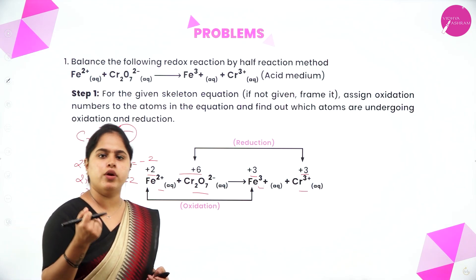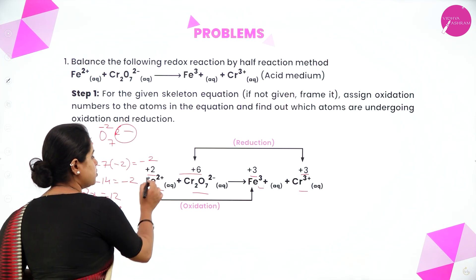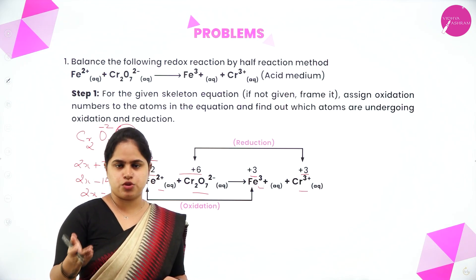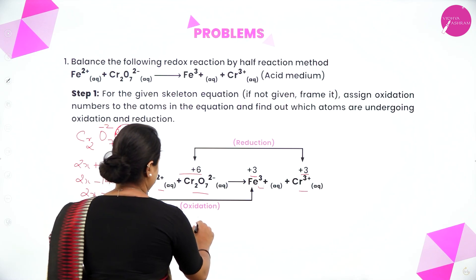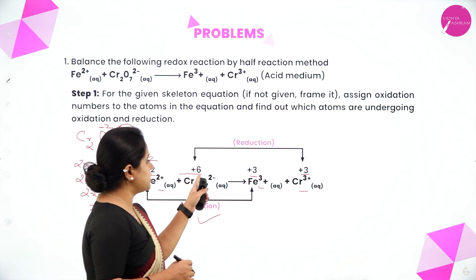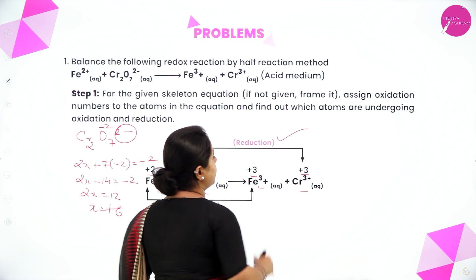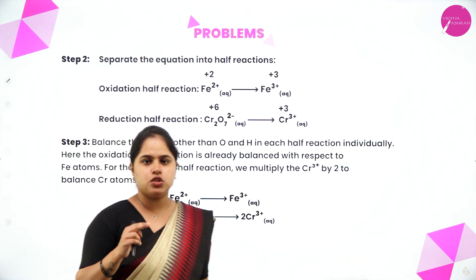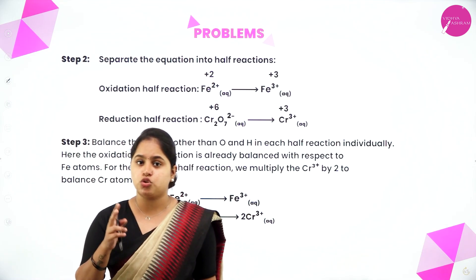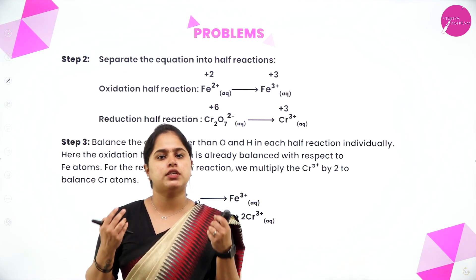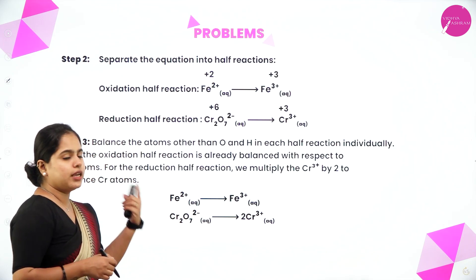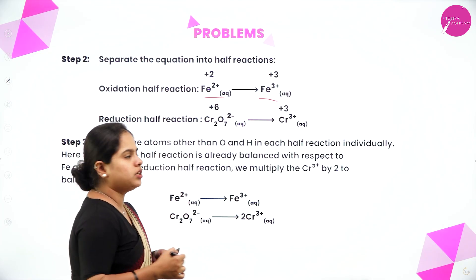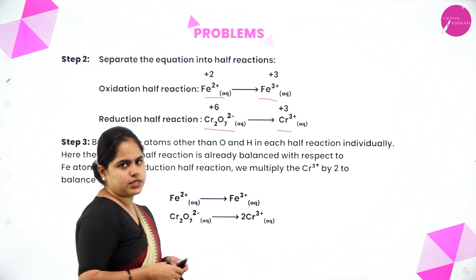Now identify which atom is undergoing oxidation and which is undergoing reduction. Iron goes from +2 to +3 — the oxidation number has increased, so iron is undergoing oxidation. Chromium goes from +6 to +3 — the oxidation number has decreased, so chromium is undergoing reduction. Step 2 is done. Now the next step is to separate the equation into two half reactions. The oxidation half reaction is Fe²⁺ getting oxidized to Fe³⁺, and the reduction half reaction is Cr₂O₇²⁻ to Cr³⁺.